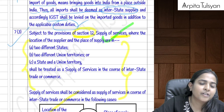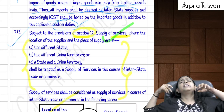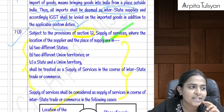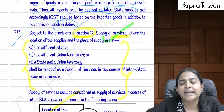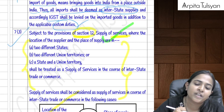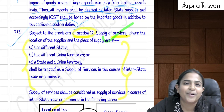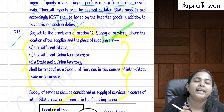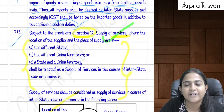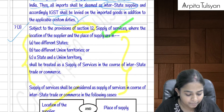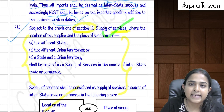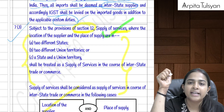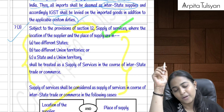Section 7(3) mirrors Section 7(1) for services: supply of services is interstate when the location of the supplier and place of supply are in two different states, two different union territories, or one state and one union territory. Section 7(4) covers import of services: since services are intangible, there is no customs frontier concept, so any service imported into India is treated as interstate supply.